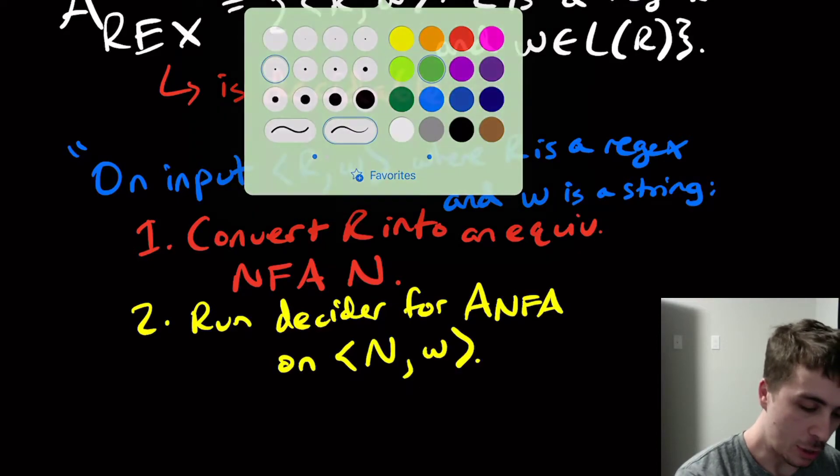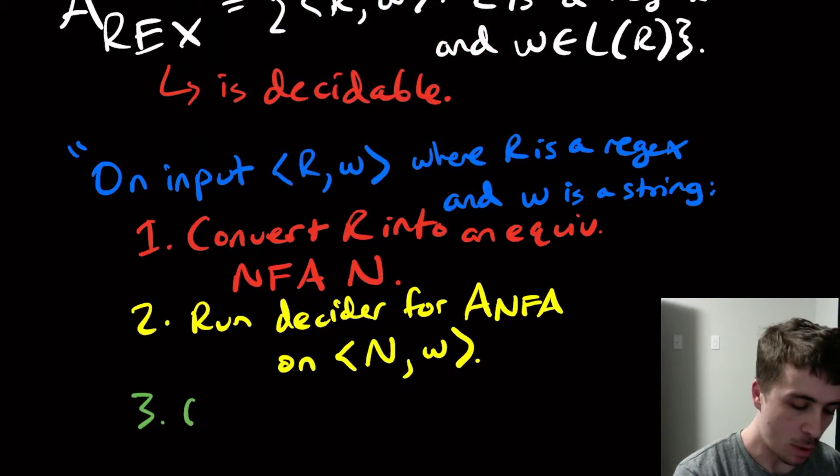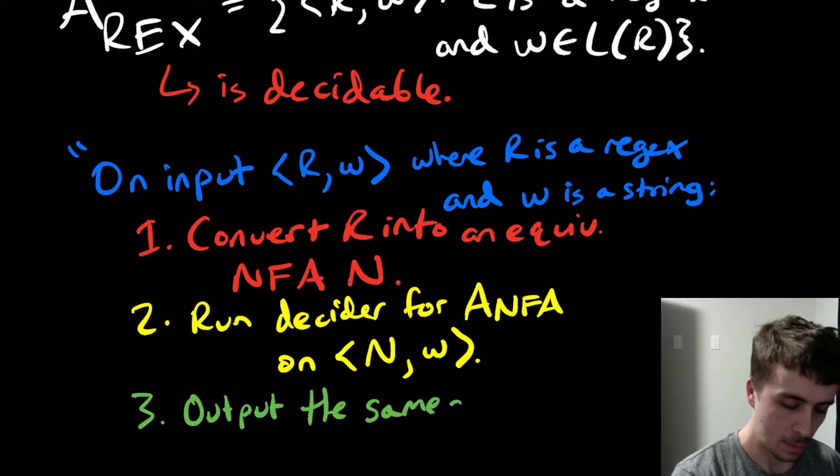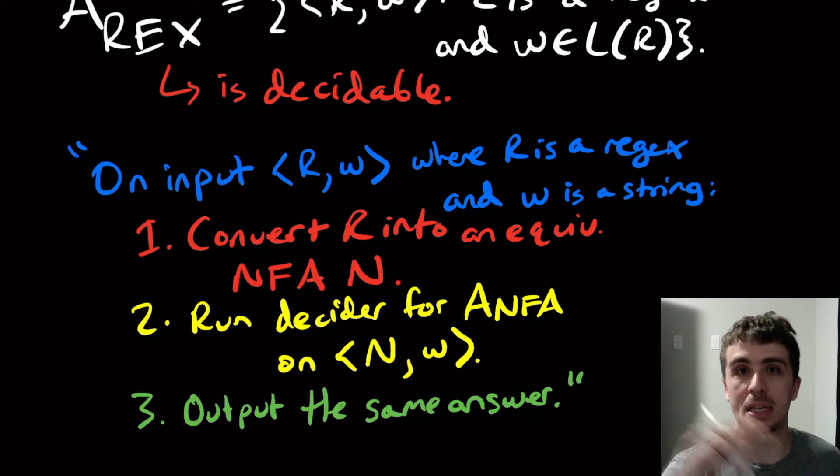And what we want to do then is we will output the same answer. And by output here, I mean go to either the q accept state or the reject state, whichever one is the case that the decider for a sub nfa says.